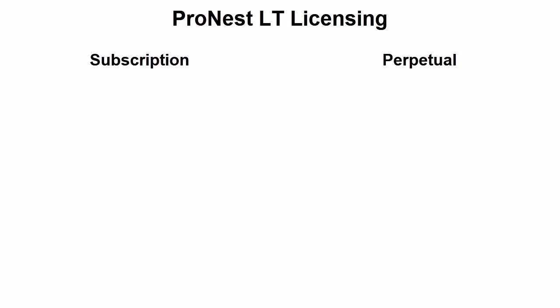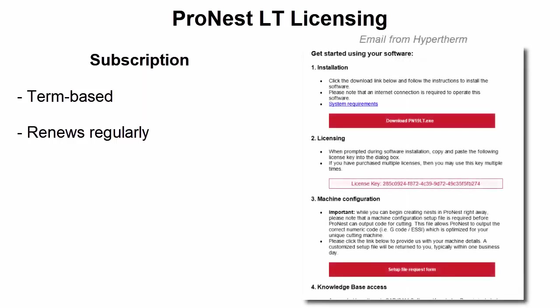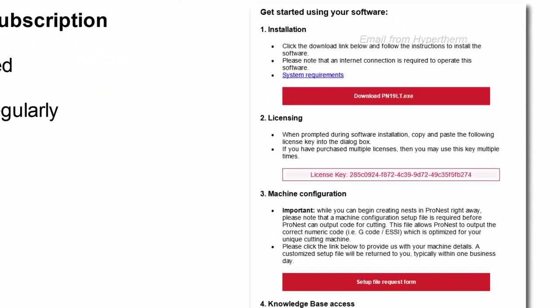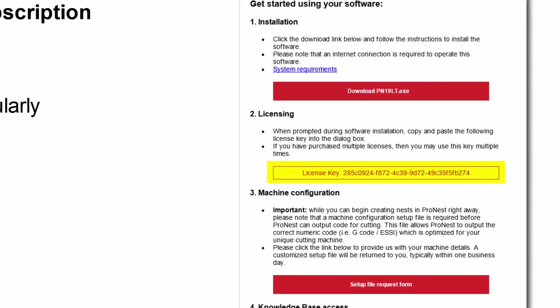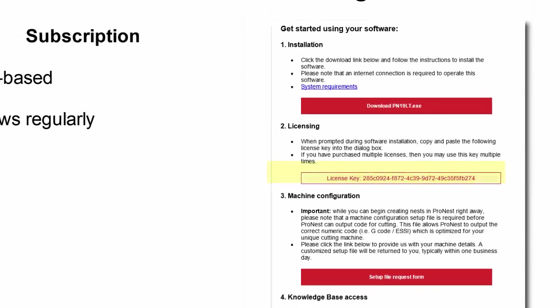A subscription license is a term-based license which renews regularly. So if you're using the subscription compatible edition of ProNest LT, you'll need to activate the software using your entitlement ID. This is sometimes called a license key. The entitlement ID is typically sent to you in an email after you purchase ProNest LT online from Hypertherm. It looks something like this. Activation is a one-time step that you need to start the license on your PC.